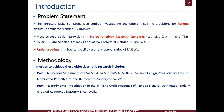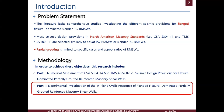To work on these objectives, this research includes two parts. Part one is a numerical assessment of the CSA and TMS seismic design provisions for flexure-dominated, partially grouted, reinforced masonry shear walls. Part two is the experimental investigation of the in-plane cyclic response of flanged, flexurally dominated, partially grouted, reinforced masonry shear walls. In this presentation, I am dealing with part two, the experimental work.